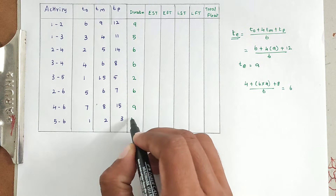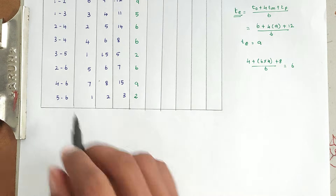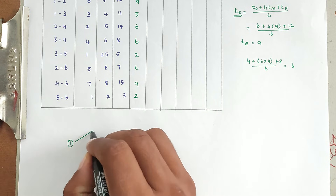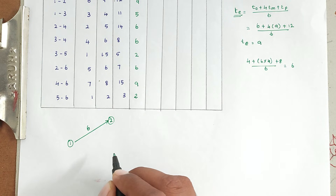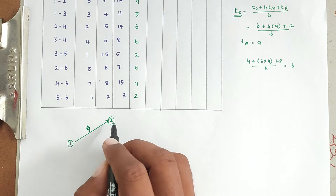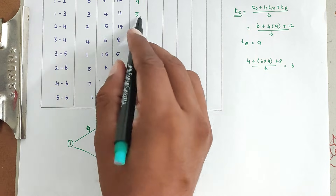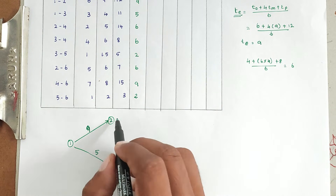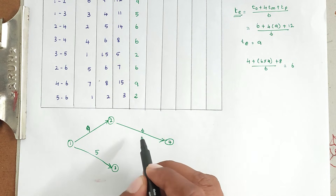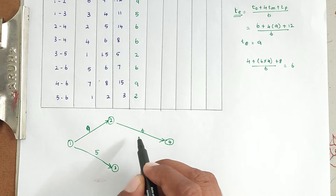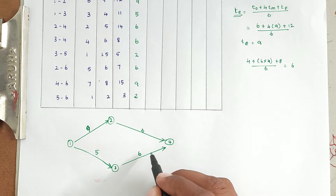Now we draw the network diagram. Activity 1-2 has duration 9, activity 1-3 has duration 5, activity 2-4 has duration 6, and activity 3-4 has duration 6.